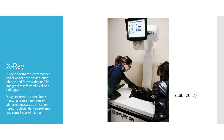X-ray is a form of electromagnetic radiation. X-rays are able to pass through objects and are commonly used to pass through the body and create an image. The image that is formed is created through a process called radiography. X-rays can be used to detect bone fractures, certain tumors, abnormal masses, pneumonia, foreign objects, dental problems, and some other types of injuries. X-rays can also work with other modalities to help destroy cancer cells.